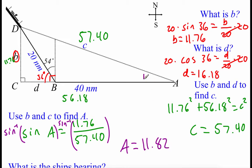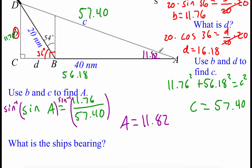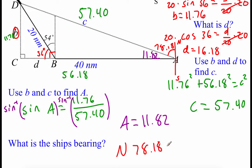I'm plugging 11.82 into the angle. We're not quite done because we haven't found the ship's bearing yet. We need to think about the vertical north-south line running through our starting point A. We know the small angle is 11.82 degrees, but we want the angle from our path to the north line up here — that missing angle must be 78.18 degrees. So the bearing is N78.18°W, since we're heading up and to the left.